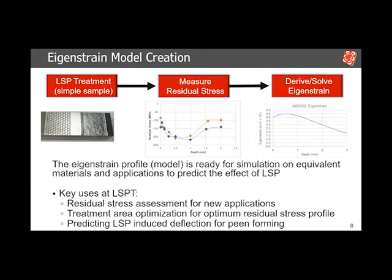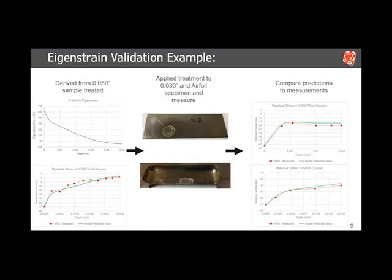One of the big uses for us is how to optimize a treatment area for a given application to maximize residual stresses. We'll see how treatment area as a function of sample geometry matters in a couple of slides. For the eigenstrain, an example we don't see a lot of in the literature is the prediction of residual stresses in very thin sample geometries — down into the millimeter and submillimeter thickness range — and how eigenstrain is applicable in dual-sided applications.